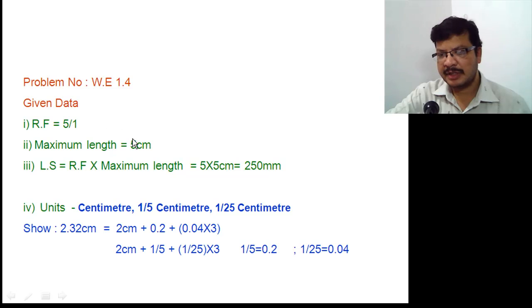From RF and maximum length, the length of the scale is obtained as 250 mm. Units that are to be represented on the scale are cm, 1/5 cm, and 1/25 cm. The distance to be shown is 2.32 cm.